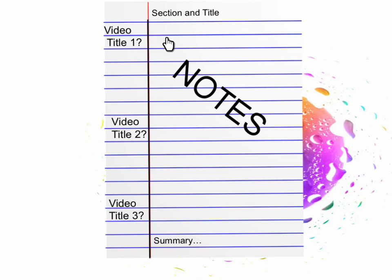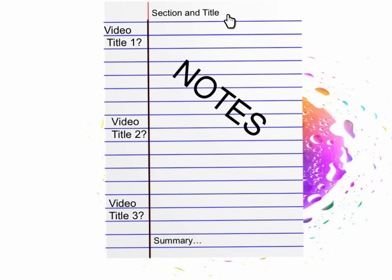Here's a reminder of how your notes should be set up for this video. Remember that you're going to have your video titles here — you should already have video title 1 from the previous video, and this is video title 2. Write all your notes here, put your chapter and section title at the top, and then after you watch the videos, do your notes, and review the notes — three different things — then you can start doing your summary at the bottom.